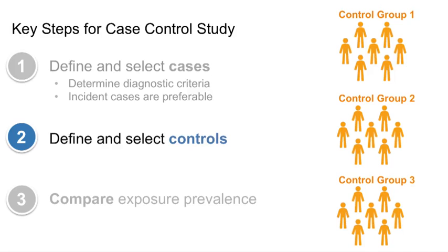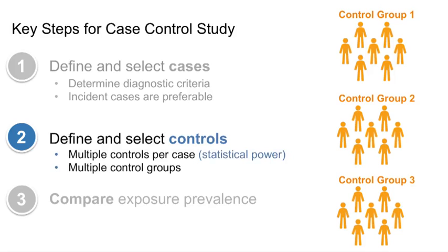When selecting controls for a study, researchers may include multiple controls per case or multiple control groups. Multiple controls per case can be used to help add statistical power when cases are unduly difficult to obtain. Statistical power refers to the size of your study and your ability to detect an association should one exist. Sometimes researchers use more than one control group to see if the relationships they find are consistent across control groups, which gives more credibility to the results.